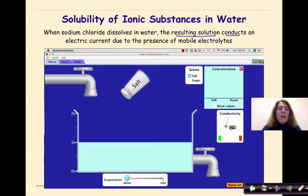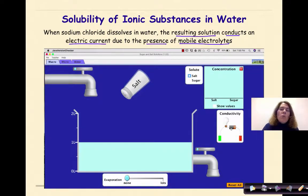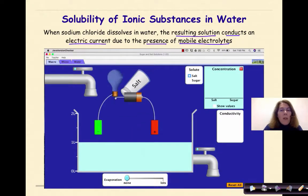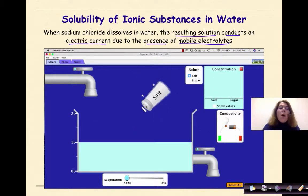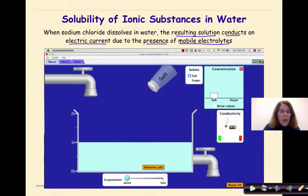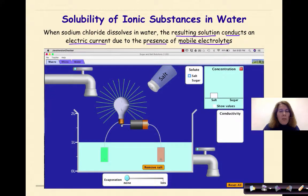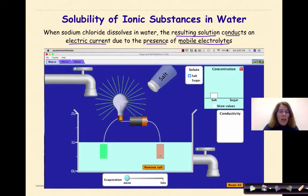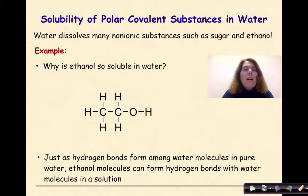In the simulation, chloride ions are surrounded by water molecules with hydrogen atoms facing inward, and sodium ions are surrounded by water molecules with the red oxygen oriented toward the positive sodium ion. When sodium chloride dissolves in water, the resulting solution conducts an electric current due to the presence of mobile electrolytes — charged particles. In the conductivity simulation, pure water does not light the bulb, but once sodium chloride is added, the bulb lights up because Na⁺ and Cl⁻ ions are present.